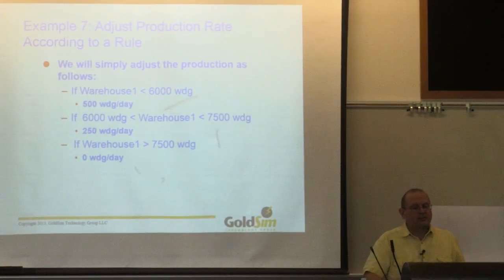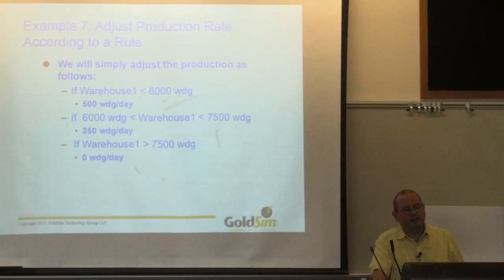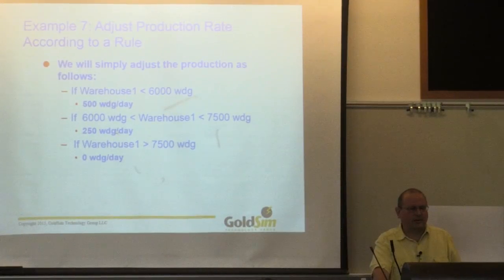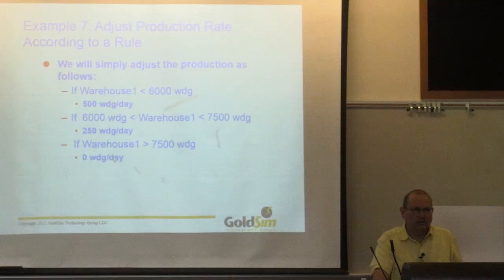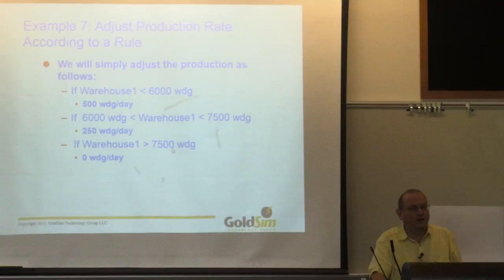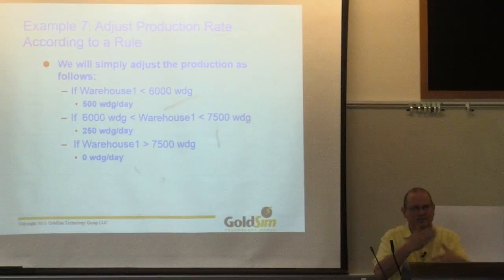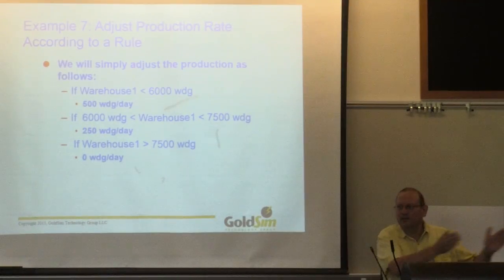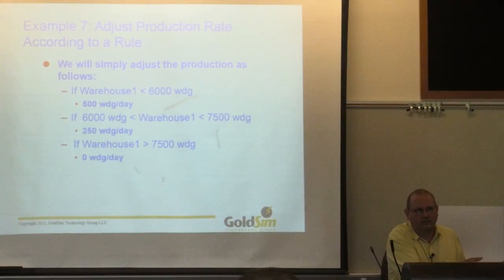In particular, I'm going to monitor Warehouse 1. If the inventory is less than 6,000, that's my production rate at full. If it's between 6,000 and 7,500, I'm going to reduce it a little bit. Once I get above 7,500, I'm shutting down production. I know the warehouse only holds 8,000, so I'm going to start ramping down production once I get above 6,000, and at 7,500 we're done. This isn't how you'd really manage it, but it's an example of tying our production rate to something in our model—in this case, the inventory in the warehouse.